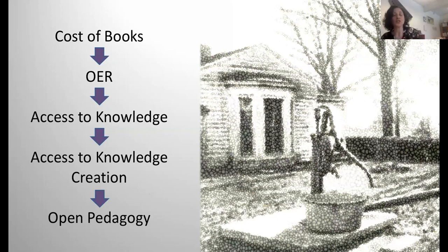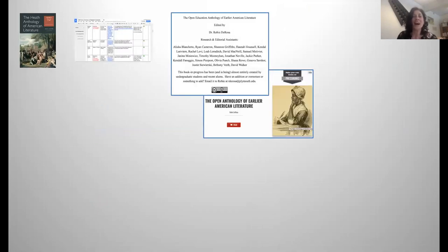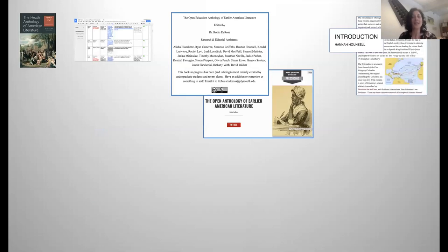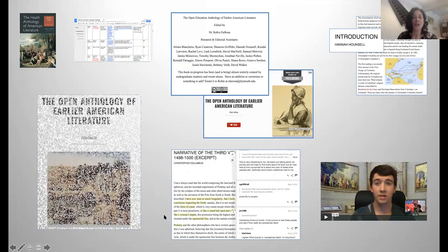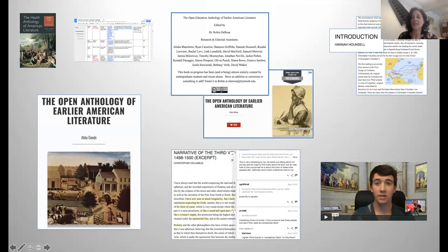I'll walk you through one of my early projects as a good example of what this can look like on the ground. This came from a class where we were building the Open Anthology of Earlier American Literature. My students were purchasing the Heath Anthology for around $90 to $100. The great irony — which all our librarians know well — is that the Heath Anthology contained literature from roughly 1400 to 1860, almost all of which was in the public domain. My students were paying $100 for a collection of public domain literature.